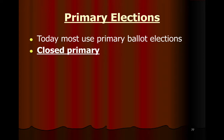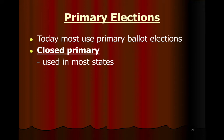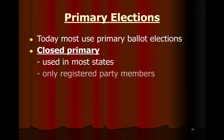Most states use what's called a closed primary, which means you have to be a member of the political party to cast a ballot. You must be a registered Democrat to vote in the Democratic primary, or Republican to vote in the Republican primary. This bars people registered as independents from voting, and would also bar someone registered as a Libertarian from voting in the Republican Party election.